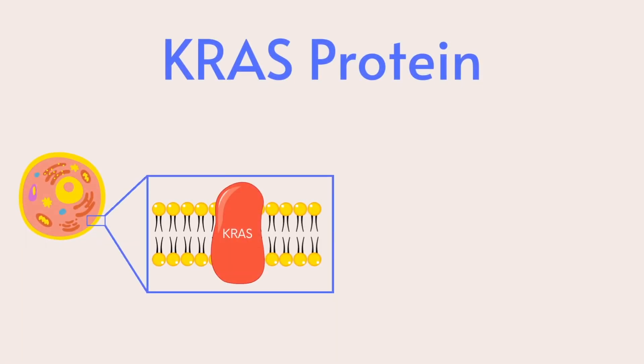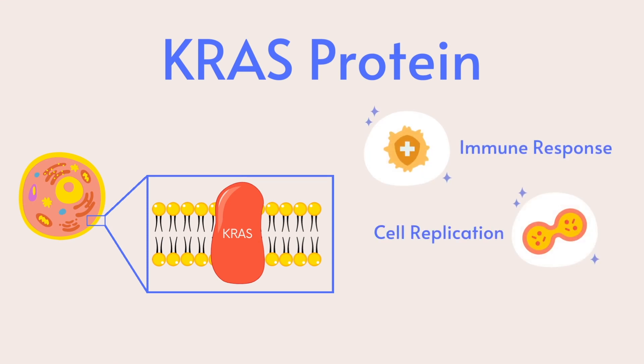KRAS is a plasma membrane anchored protein that regulates various cellular processes such as immune response, cell replication, and cell structure.